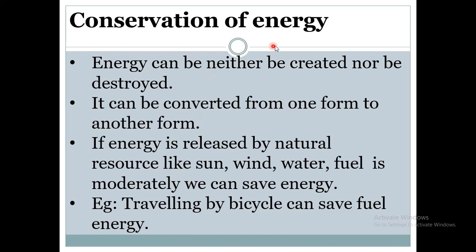Conservation of energy: energy cannot be created or destroyed. Energy can be neither created nor destroyed — it can only be converted. When energy is converted from one form to another, no new energy is created and no energy is destroyed. If energy is released by natural resources like sun, wind, water, and fuel, we can moderately save energy. For example, if you travel by bicycle, you can save fuel energy. Energy released by natural resources can be alternatively used to save other sources of energy.